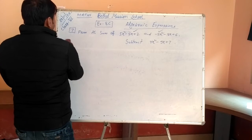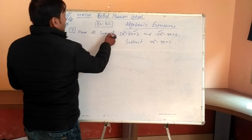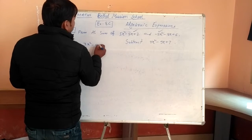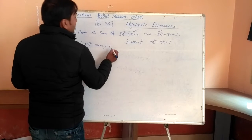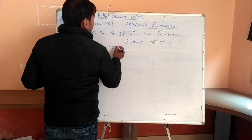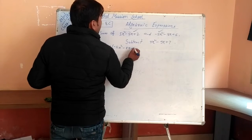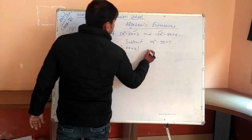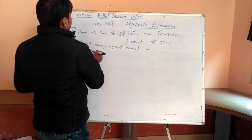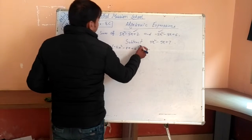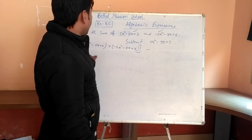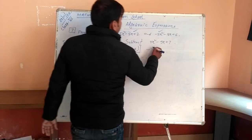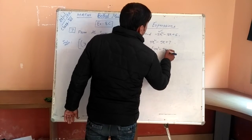So first, write down in sum form. Sum of this and this means 3X squared minus 5X plus 2. This is sum, means plus this one: 5X squared minus 8X plus 6. You have to subtract this one. Subtract means minus. But here, both first you have to do, that's why we are going to take this one in bracket. First we have to find the sum of this and subtract this one. You can write 4X squared minus 9X plus 7.